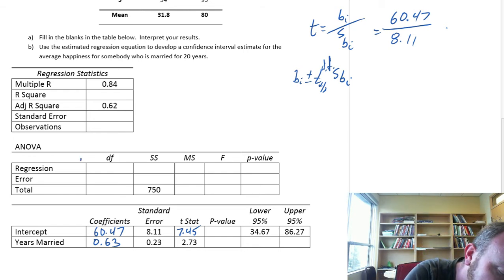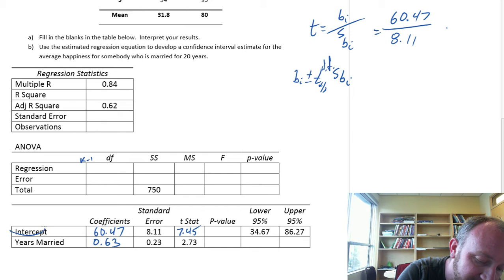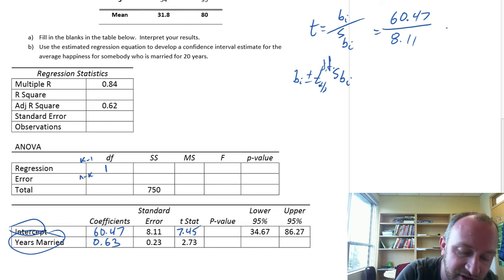All of our formulas for regression: k minus 1. k is the number of coefficients that we've estimated. Here we've estimated an intercept and a slope, so k is 2. So degrees of freedom is 1. Error, this is n minus k. We have 5 observations, 5 minus 2 is 3.